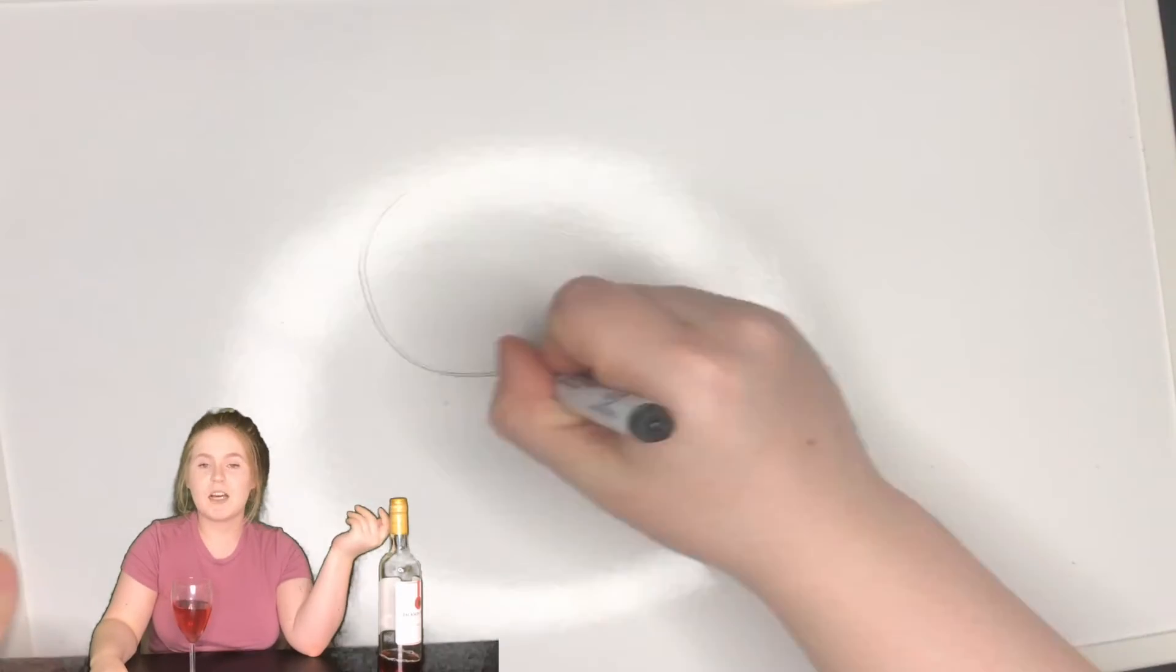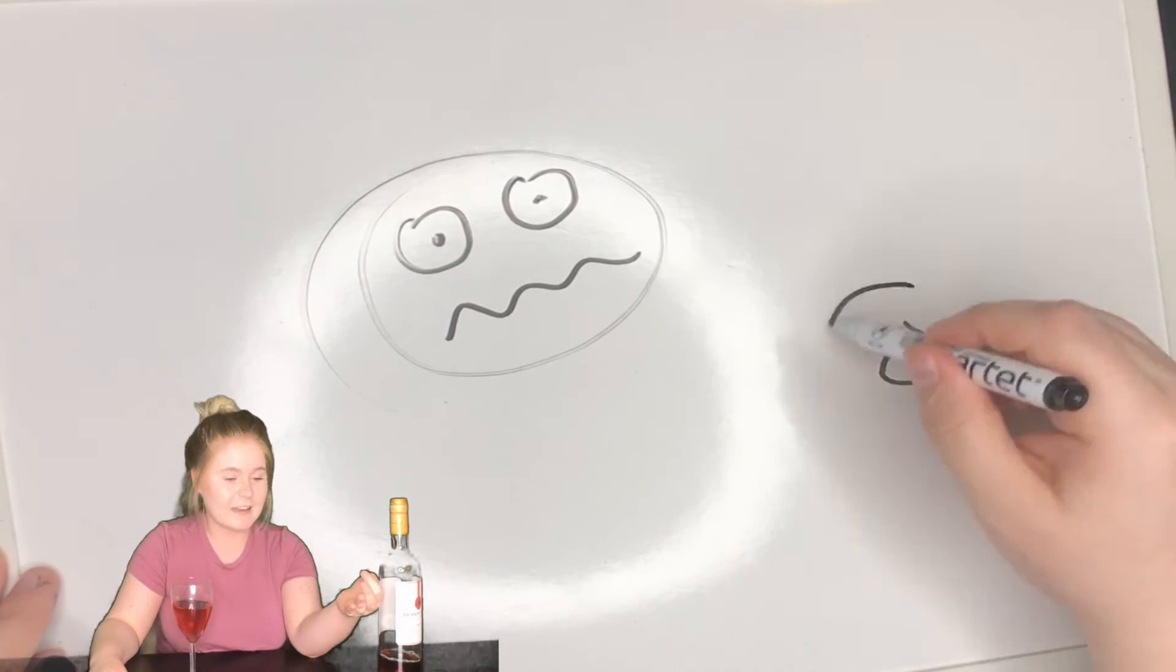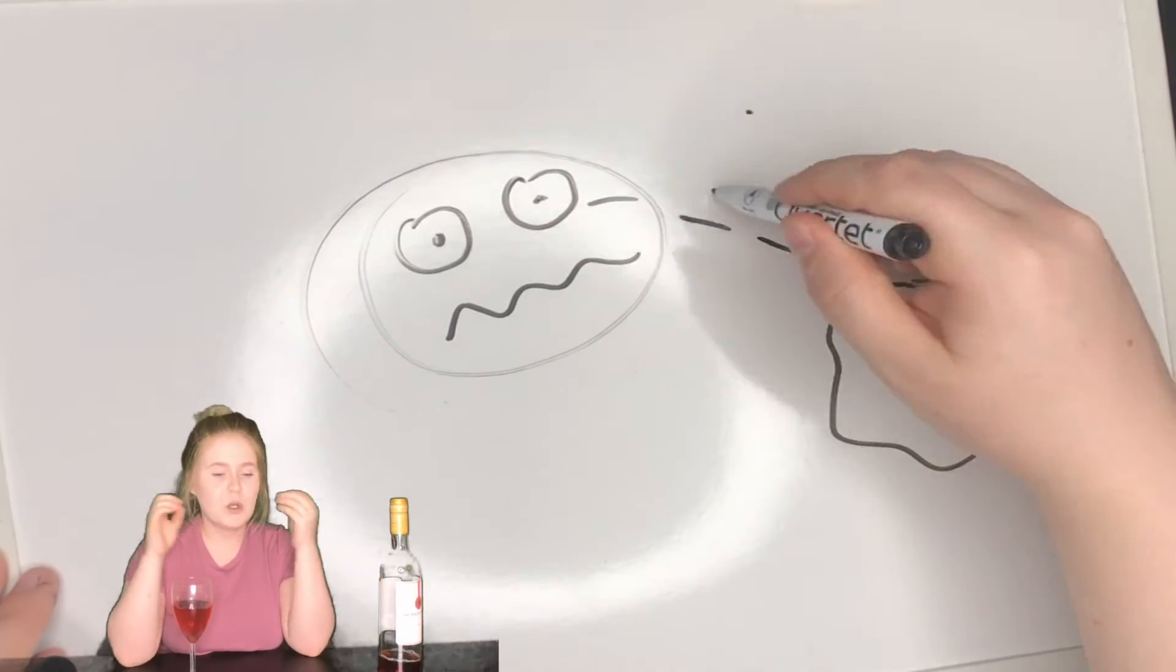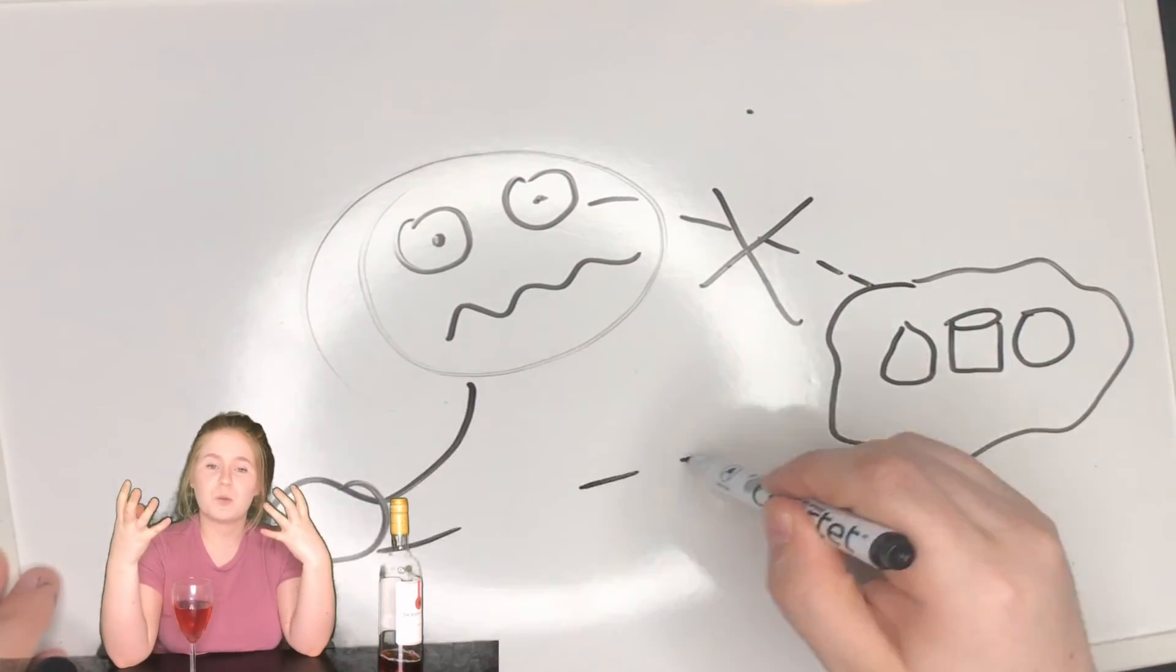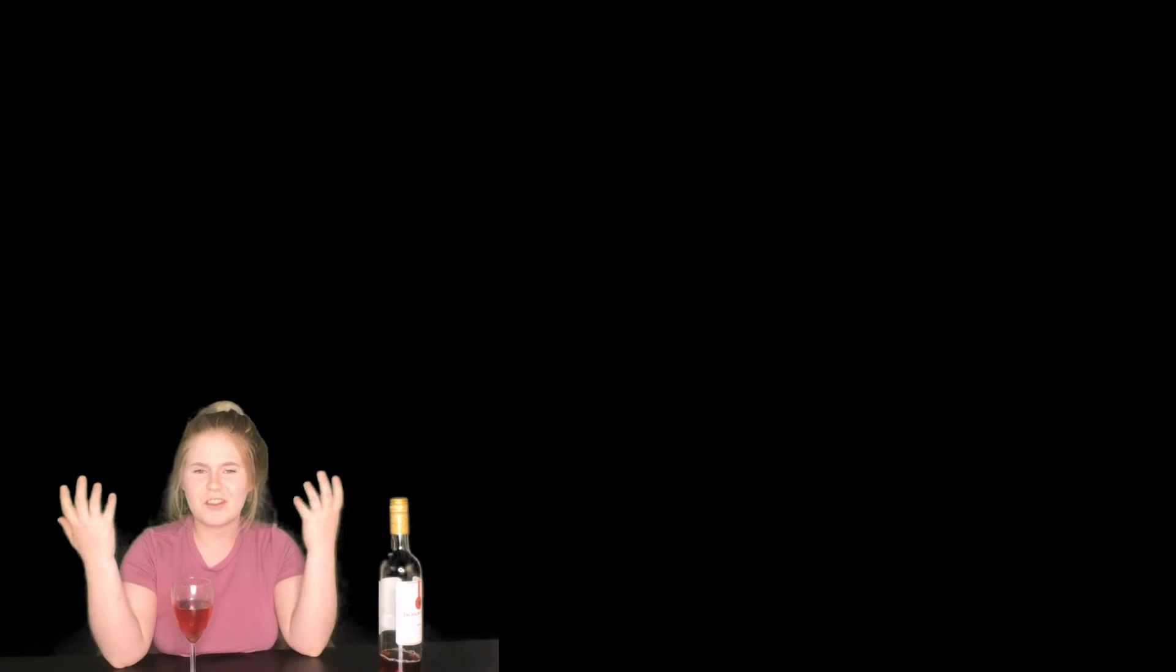This is the Heisenberg uncertainty principle. And if that didn't make you uncomfortable enough, just know there's things that are there that we cannot see, we cannot touch, we cannot interact with without changing what they are. But we know that they're there.